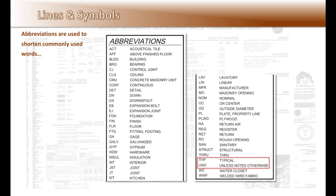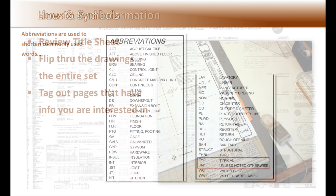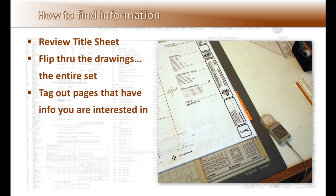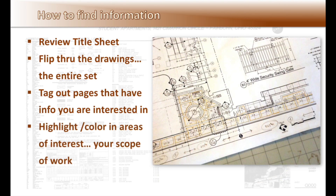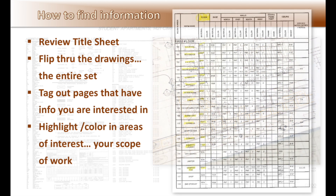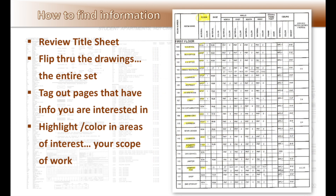More on estimating in Unit 17. How to find information on the drawings: first, review the title sheet. Then my recommendation is to flip through the entire set of drawings — yes, I know that's a lot of work, but that's what I do, and I always do it. Next, tag out the pages you have information on that you are interested in if you're a subcontractor, or key pages if you are a general contractor. Begin to highlight or color areas of interest or the scope of work.